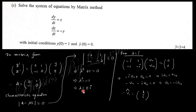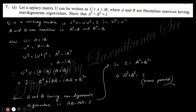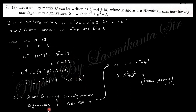For more detail on this chapter, there is another playlist — you can go through the description bar or the channel. Next question: let unitary matrix U = A + iB, where A is a Hermitian matrix with non-degenerate eigenvalues, and A² + B² = I. Since U is unitary, U†U = I, and since A and B are Hermitian, A† = A and B† = B. Taking the conjugate transpose of U and multiplying gives the required condition, and since A and B have non-degenerate eigenvalues, AB − BA = 0, yielding A² + B² = I.